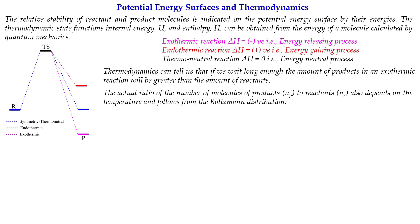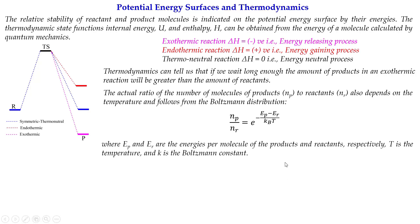If you know the energies of reactants and products, you can also calculate their mutual distributions — how many molecules will be on the reactant side or product side — from the Boltzmann distribution law. Here, N_P and N_R are the populations of the true states, which depend on their energy difference, where k_B is the Boltzmann constant, T is temperature, and E_P and E_R are energies per molecule of products and reactants.